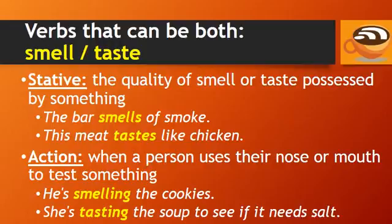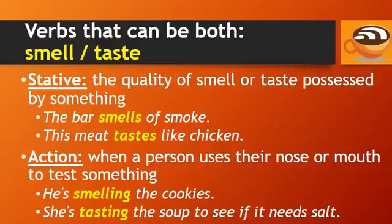'Smell' and 'taste' are stative verbs when describing the quality of smell or taste possessed by something. For example, 'The bar smells of smoke,' or 'This meat tastes like chicken.' They are action verbs when a person uses their nose or mouth to test something. For example, 'He's smelling the cookies,' and 'She's tasting the soup to see if it needs salt.'